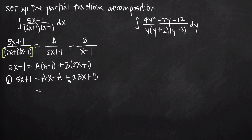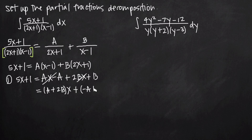Now I group like terms together by looking for the same degree x value. We have an x to the first degree term and another x to the first degree term, so when we pair those together we get ax plus 2bx, or factoring out x, we get a plus 2b times x. Then we have negative a and plus b — both constants — so we get plus negative a plus b.